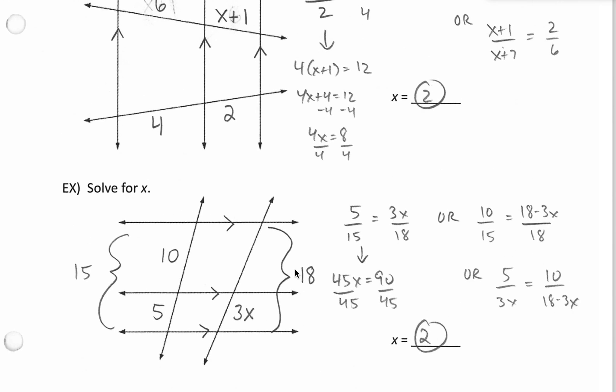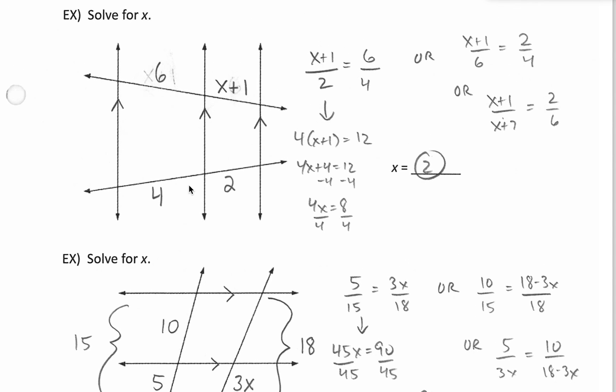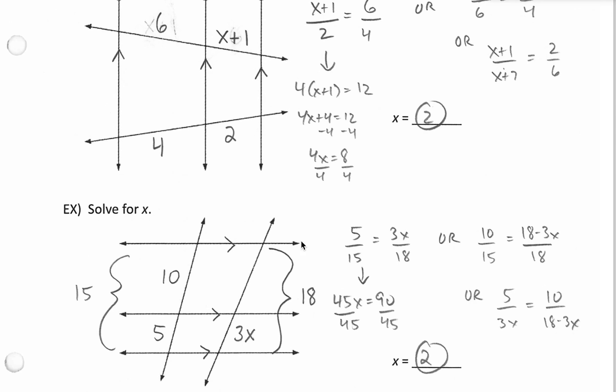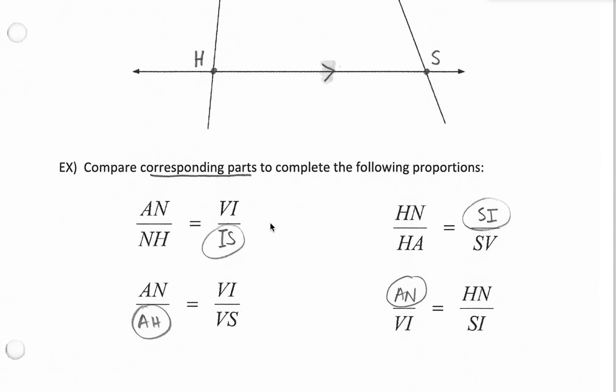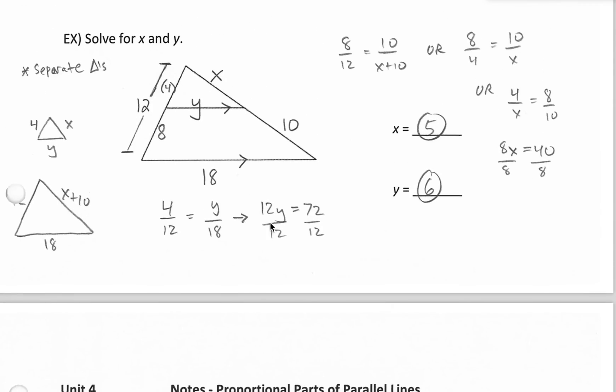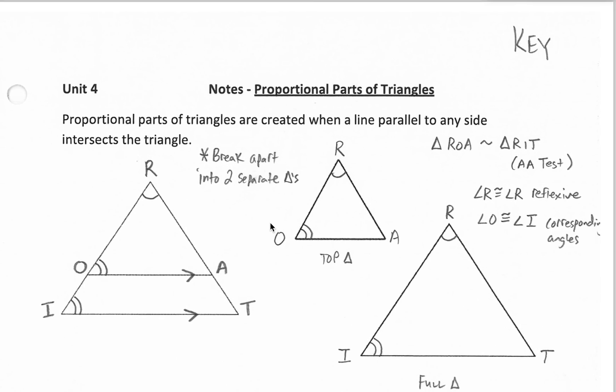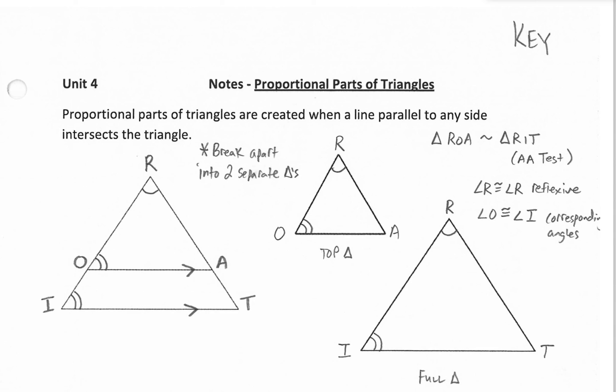All right. So essentially, to help you solve for unknown measures in these proportional triangles or proportional parallel lines, you're just trying to compare ratios of corresponding points, parts. Let's just say that one more time. Compare corresponding parts. There you go. All right. Good luck comparing corresponding parts to solve for unknown lengths. Thank you.